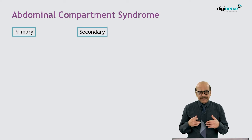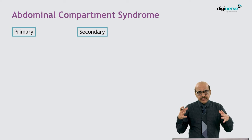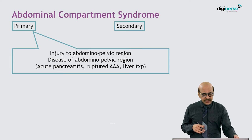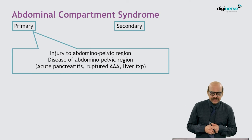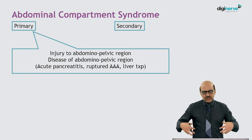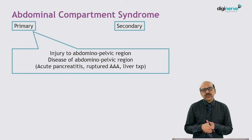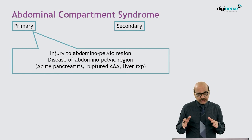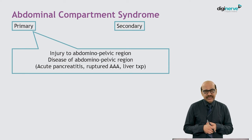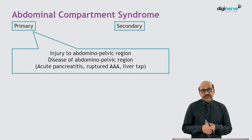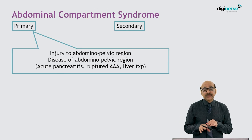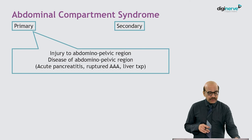The causes could be primary — inherent causes within the abdomen — or secondary, from causes outside the abdominal cavity. Primary causes include injury to abdominal or pelvic viscera, diseases, inflammations, and infections of abdominal organs, acute pancreatitis, ruptured abdominal aortic aneurysm, and prolonged procedures such as liver transplant, where at least one third of patients have been shown to develop abdominal compartment syndrome.